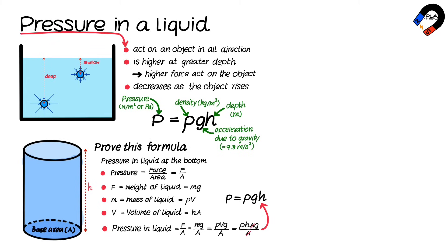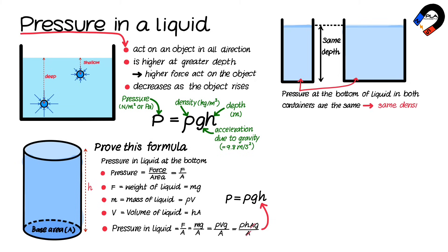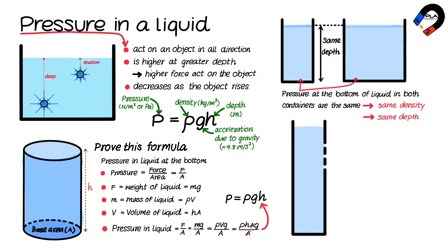We can conclude that pressure in a liquid depends on the density of the liquid and the depth. Two containers filled with the same liquid to the same depth have the same pressure at the bottom, regardless of the size of the containers.